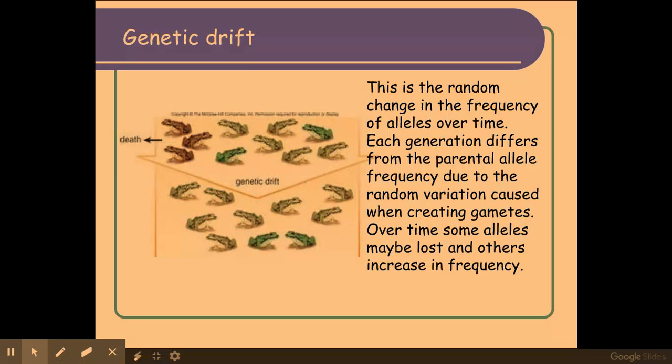Genetic drift is the random change in the frequency of alleles over time, and this comes about due to the genetic variation that is created when you make gametes. Genetic variation occurs when you're making gametes through crossing over at prophase 1 and the independent assortment that occurs at metaphase 1 and 2. As a result of this random change and variation within the gametes, over time some alleles may be lost and others may increase in frequency purely due to chance.